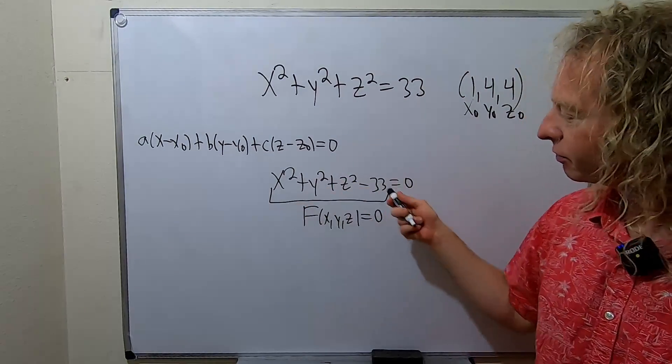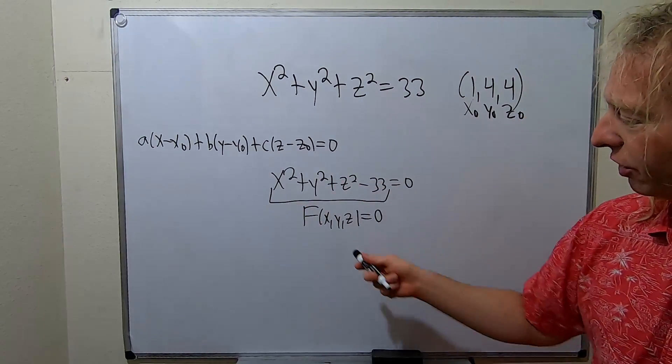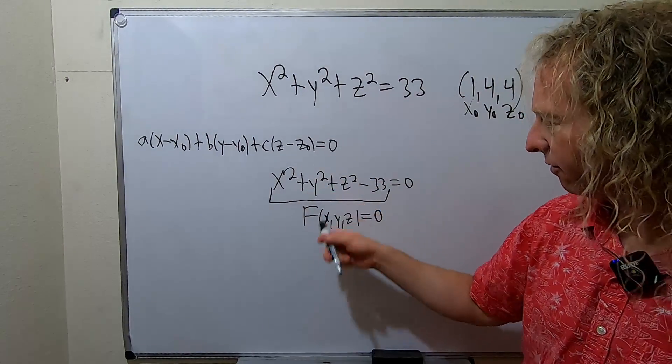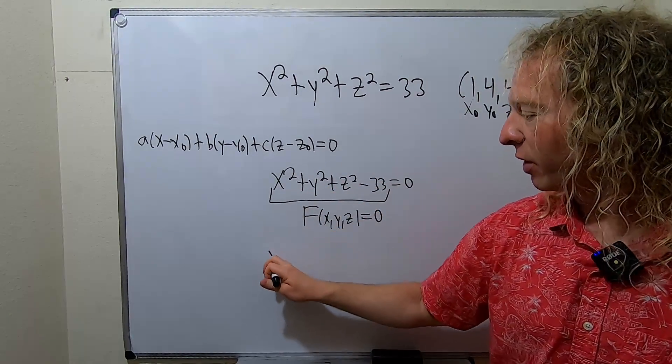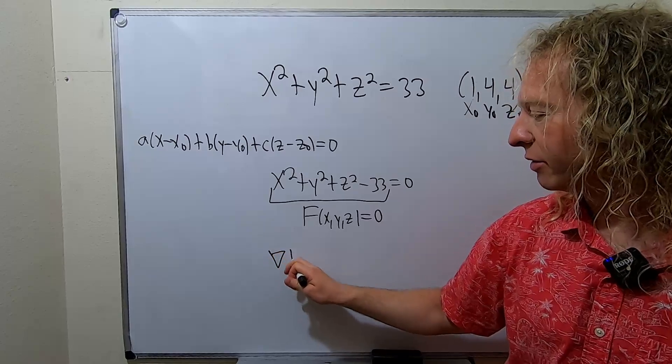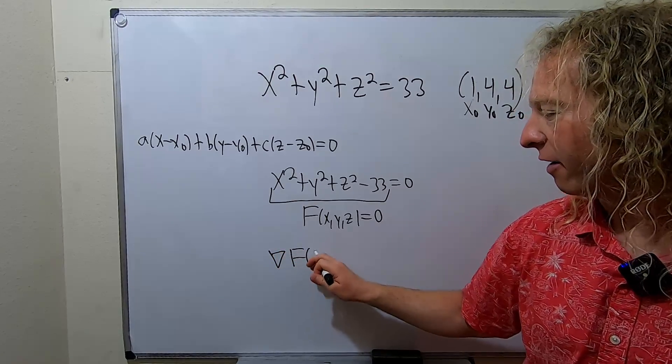So again, step one: set it equal to zero and call this big F. Now we're going to write down the gradient of big F.